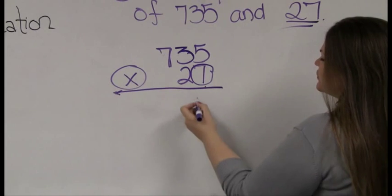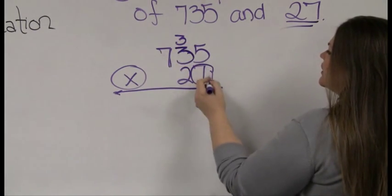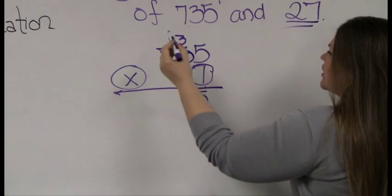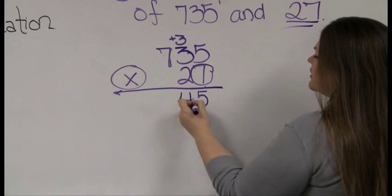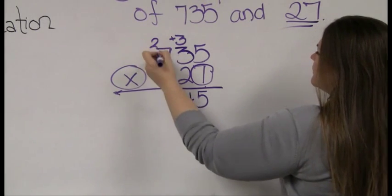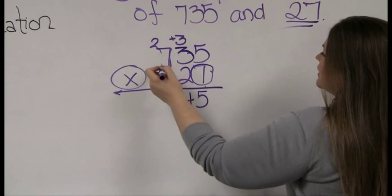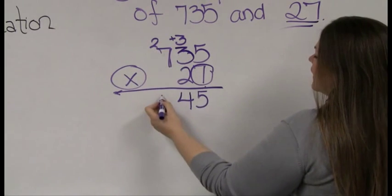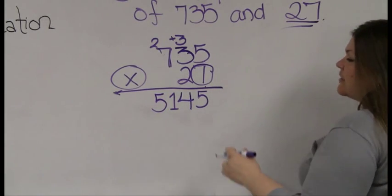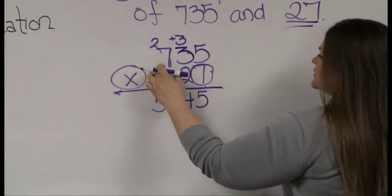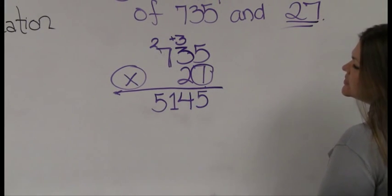7 times 5 is 35 — drop the 5, raise the 3. 7 times 3 is 21, add that 3 in there to get 24 — the 4 comes down, the 2 goes up. 7 times 7 is 49, add the 2 gives 51. If you weren't sure that 7×7 is 49, you can prove it to yourself using repeated addition.